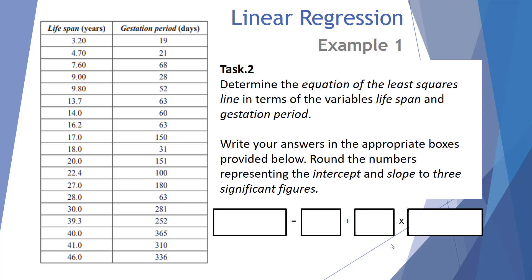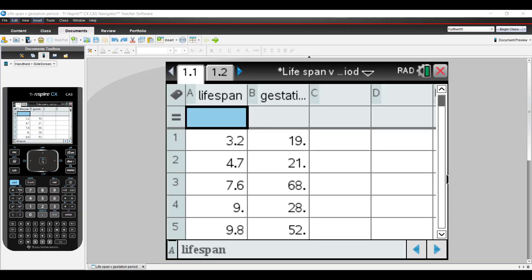Task number two: determine the equation of the least squared line in terms of the variables lifespan and gestation period. We're asked to put the information in the boxes below, around the numbers representing the intercept and slope, to three significant figures. At this point I'll turn to my TI-Inspire calculator — we have our data already entered.